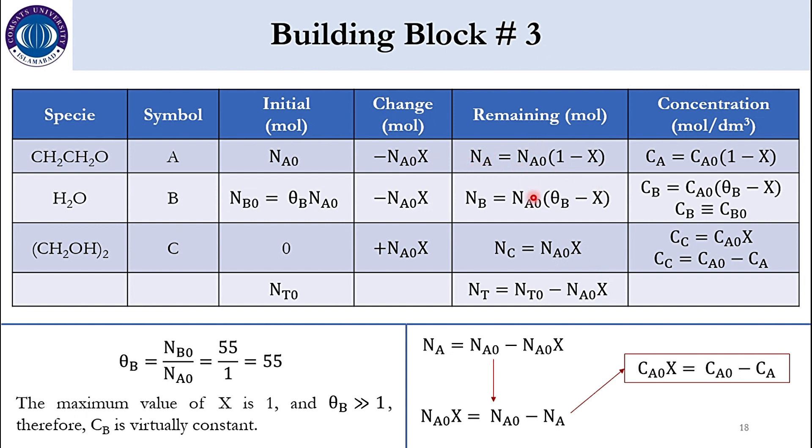Now dividing whole equation by capital V. And V is equal to V0 obviously. So accordingly this NA0 will go to CA0. And this NA will go to CA. So CA is equal to CA0 1 minus x. CB is equal to CA0 θB minus x. Or we can virtually say that CB is approximately equal to CB0. C of C is equal to CA0x. As you can see. Or that can be said as C of C is equal to CA0 minus CA.